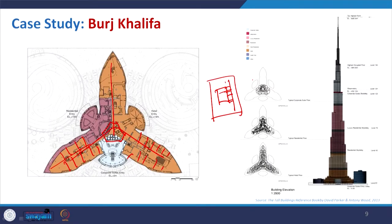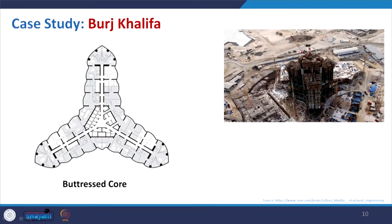Looking at the plan, the hexagonal core is very prominent and continues throughout, while the wings become progressively shorter in a very systematic manner, resulting in an overall conical shape for the building. This is the Y-shaped buttressed core structure. In the under-construction photograph you can see the core being built and the wings under construction.